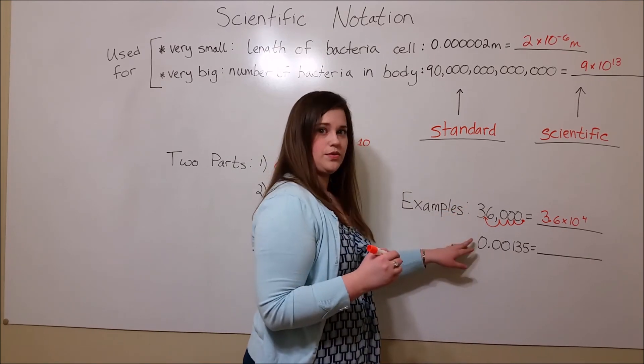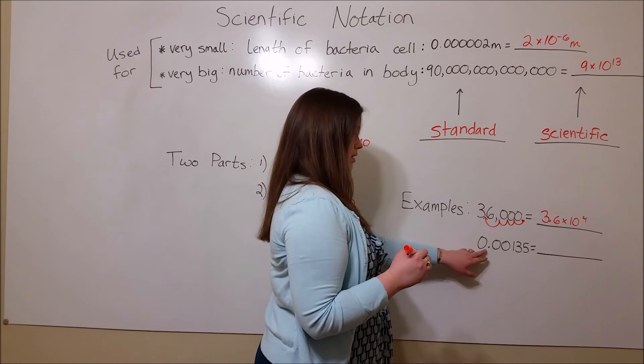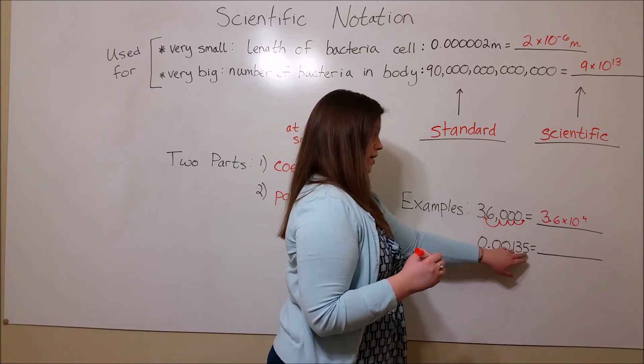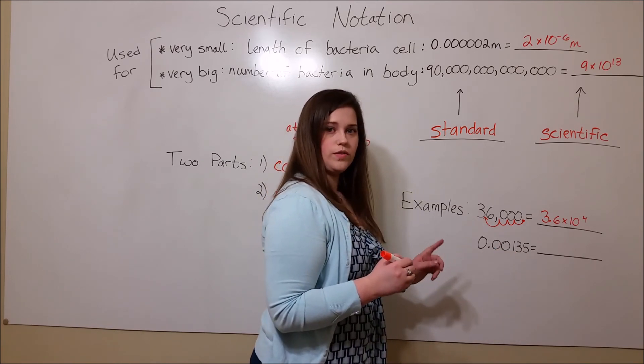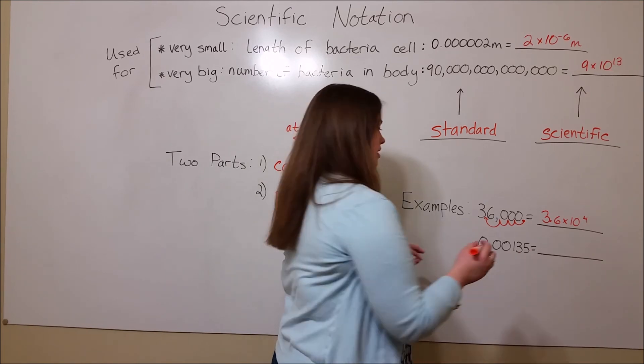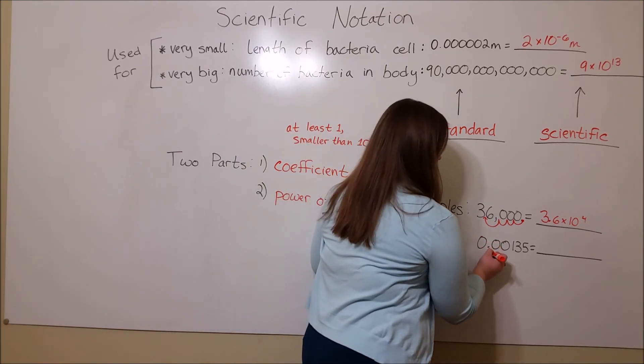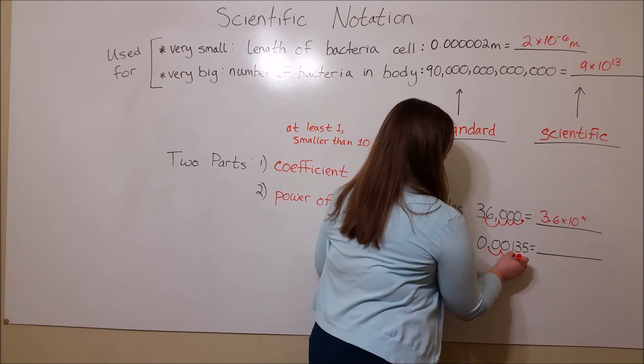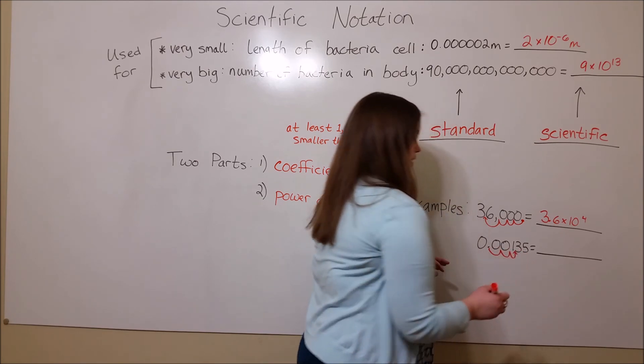Let's do another example, this time with a small number. 0.00135. Again, we move the decimal point to get it to the right place for a coefficient. Here, we're going to move it 1, 2, 3.